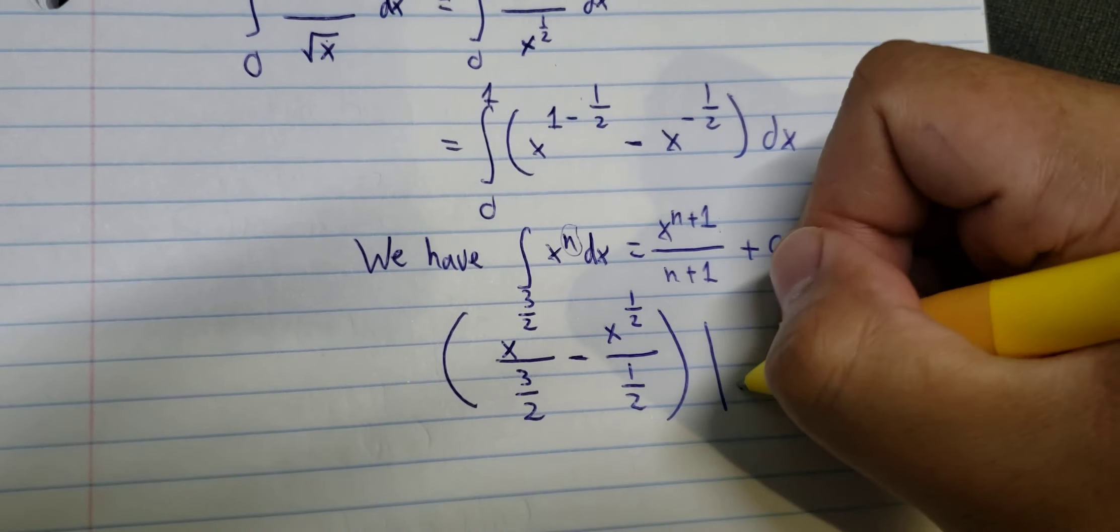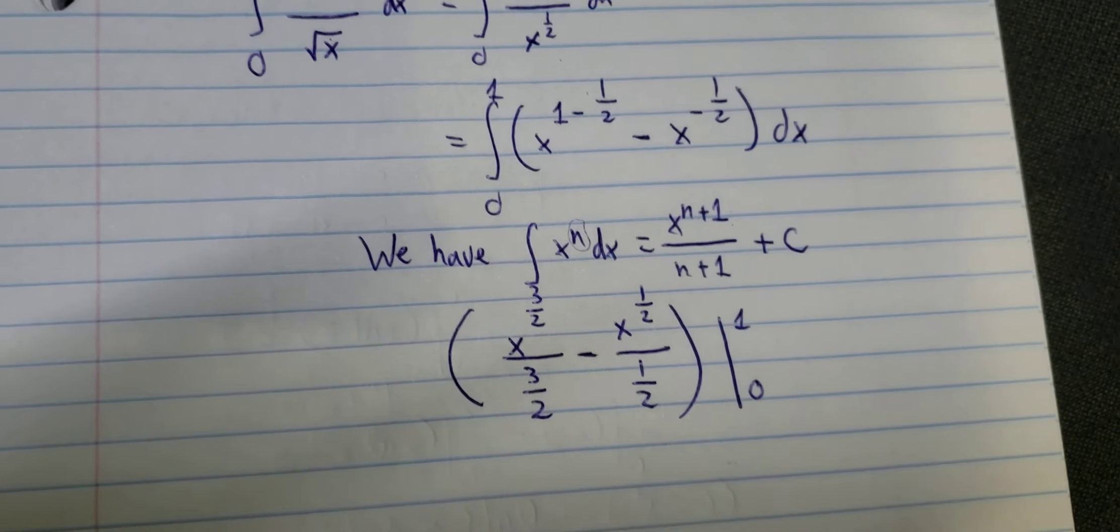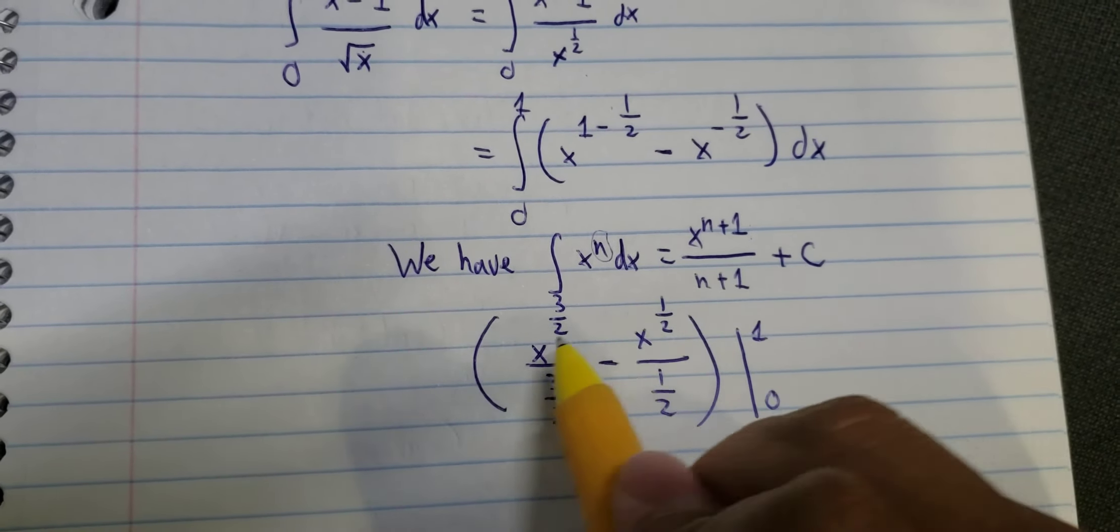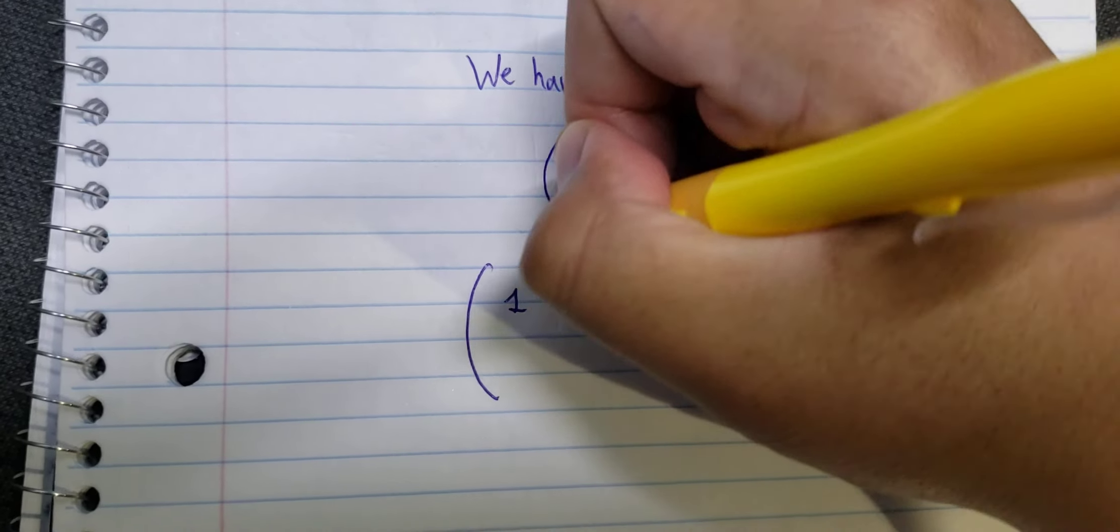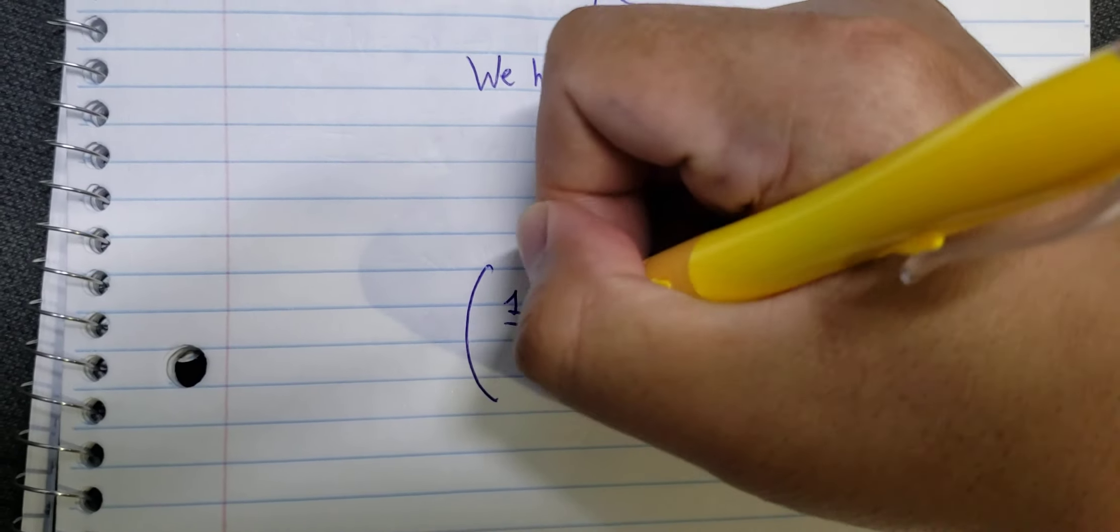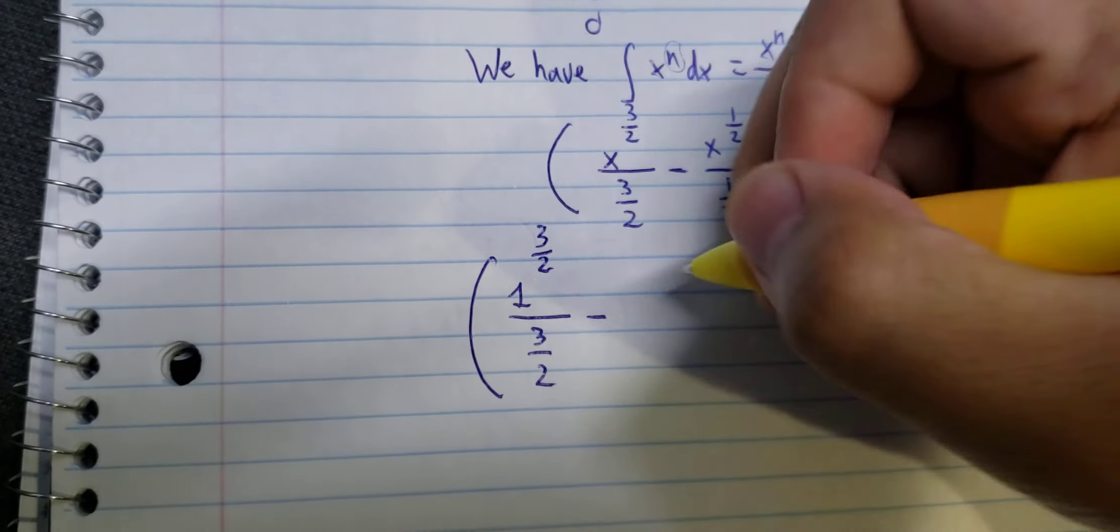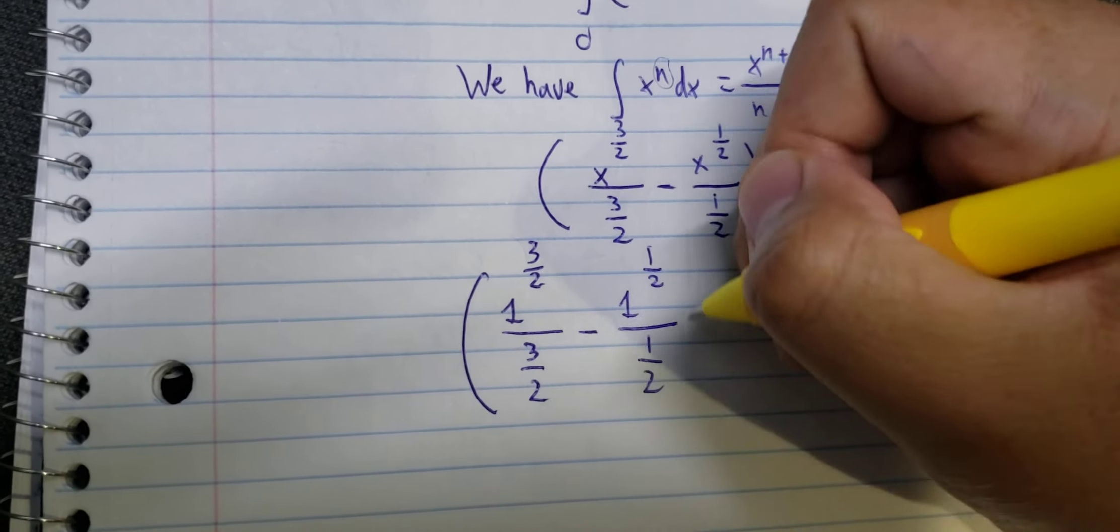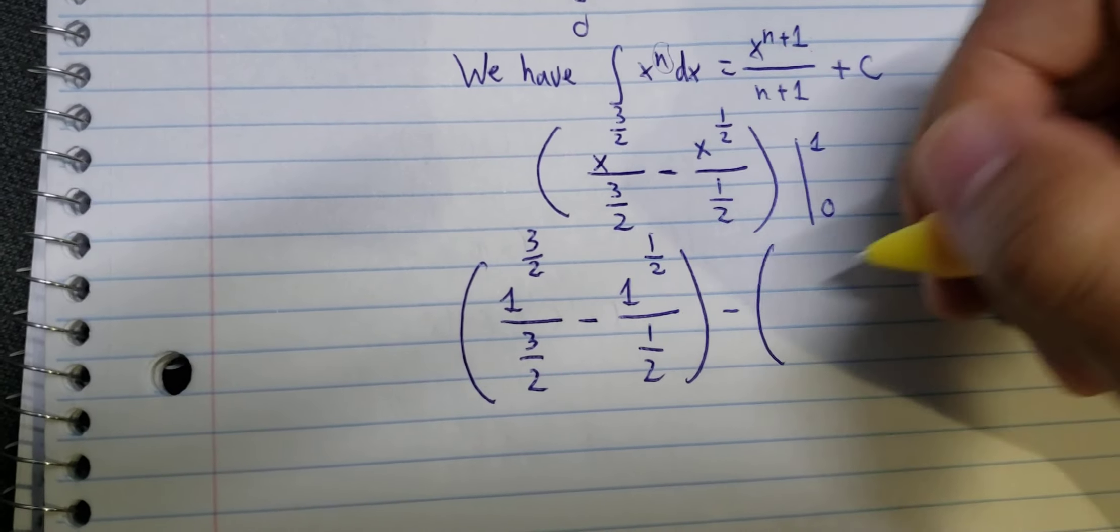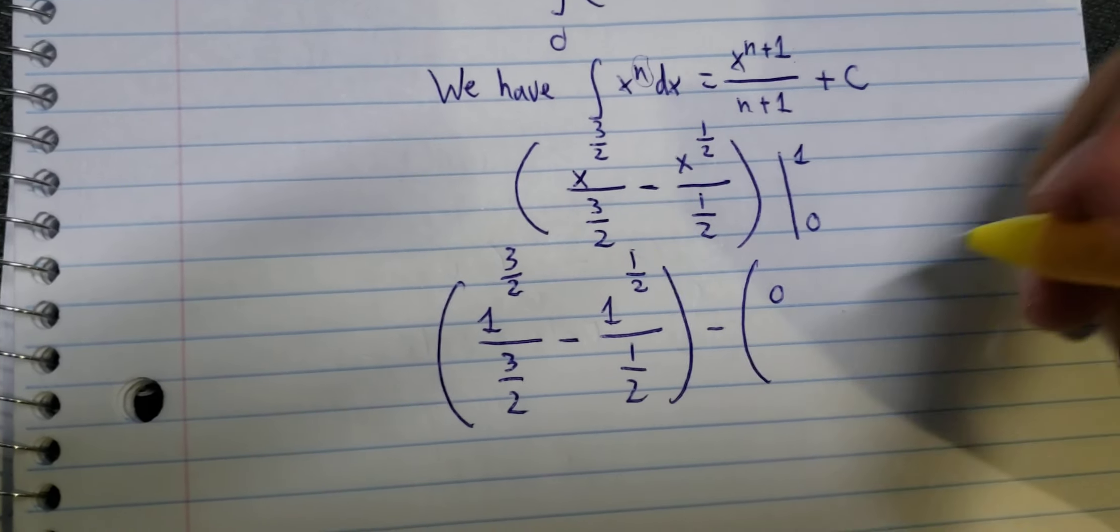And then we put the bounds from zero to number one. So we put number one in here, and then we put number zero in here.